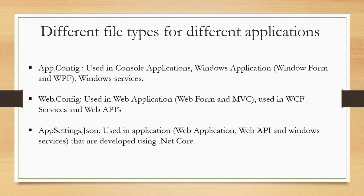app.config is used in client-installable applications on Windows, like console applications, Windows services, Windows Forms, and WPF. web.config is used in web applications like traditional ASP.NET Web Forms, ASP.NET MVC, WCF services, and Web APIs. appsettings.json is used in the latest .NET development technology — .NET Core CLR — for web applications, Web APIs, and Windows services. It is a simple JSON file consisting of key-value pairs.